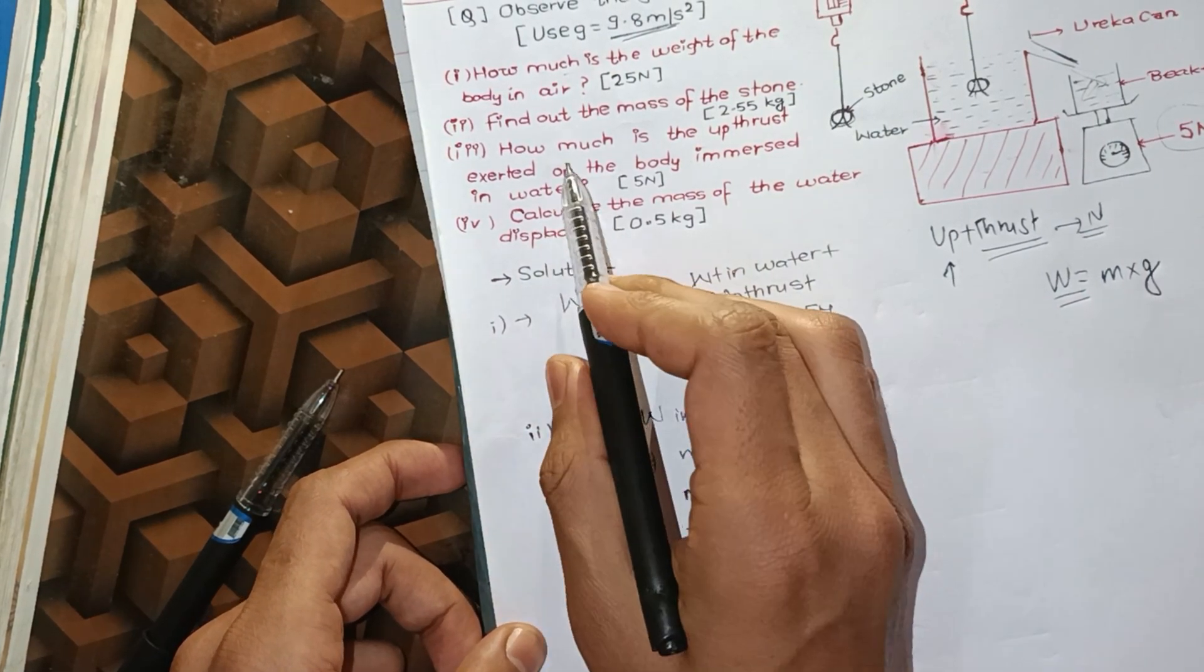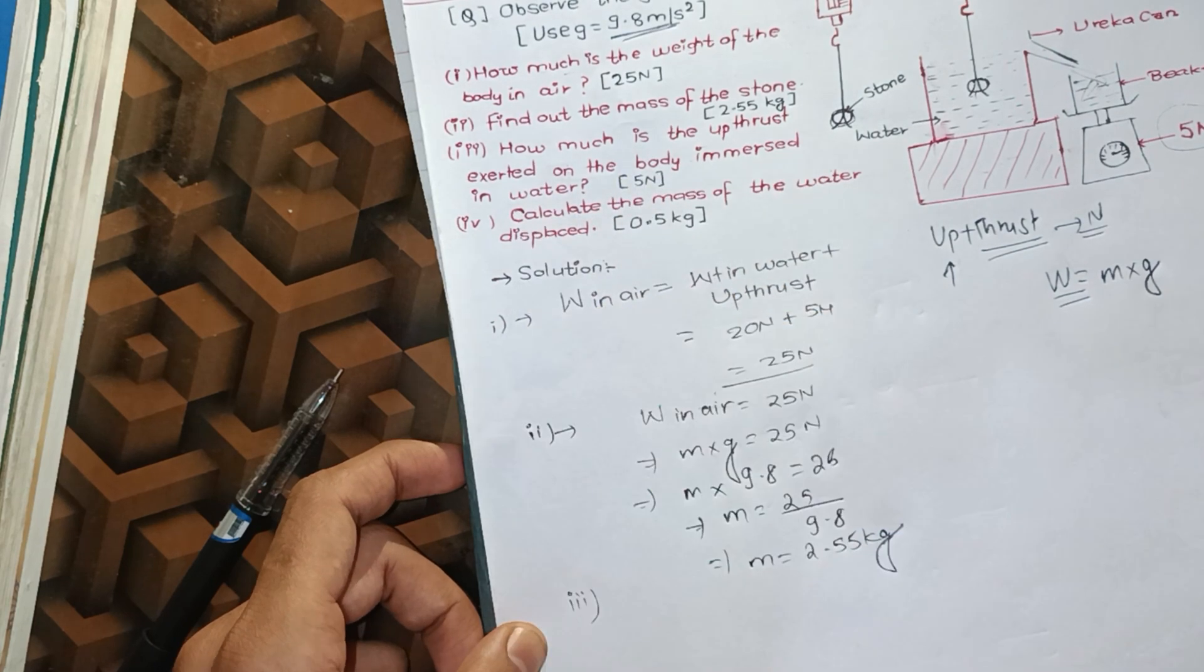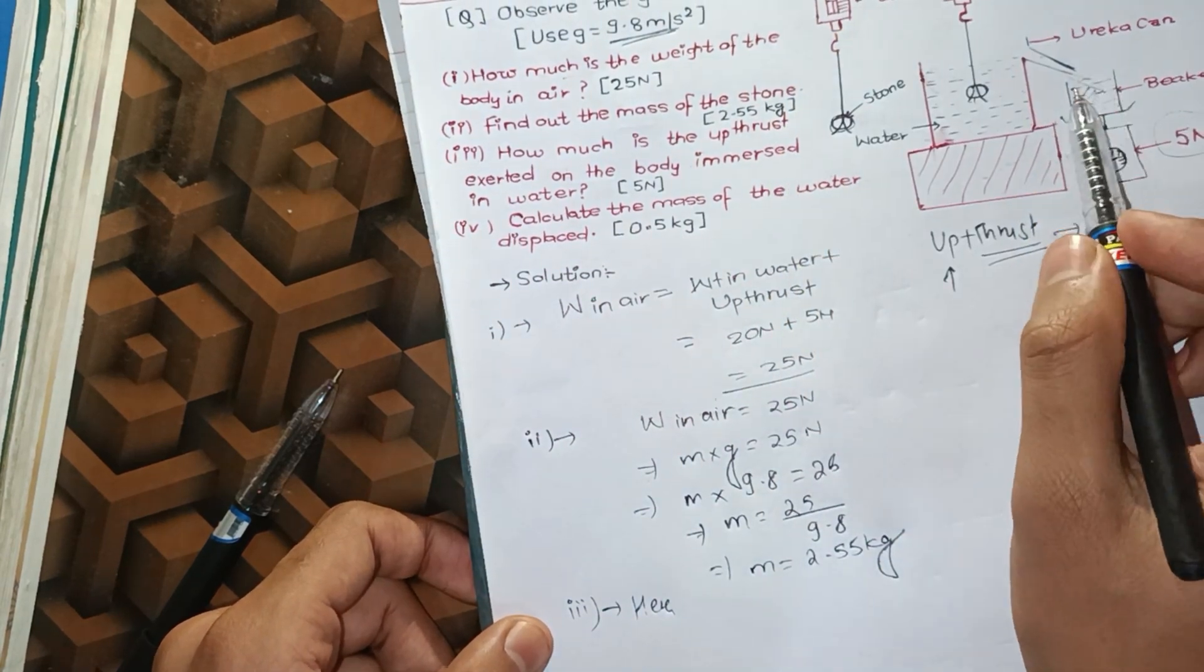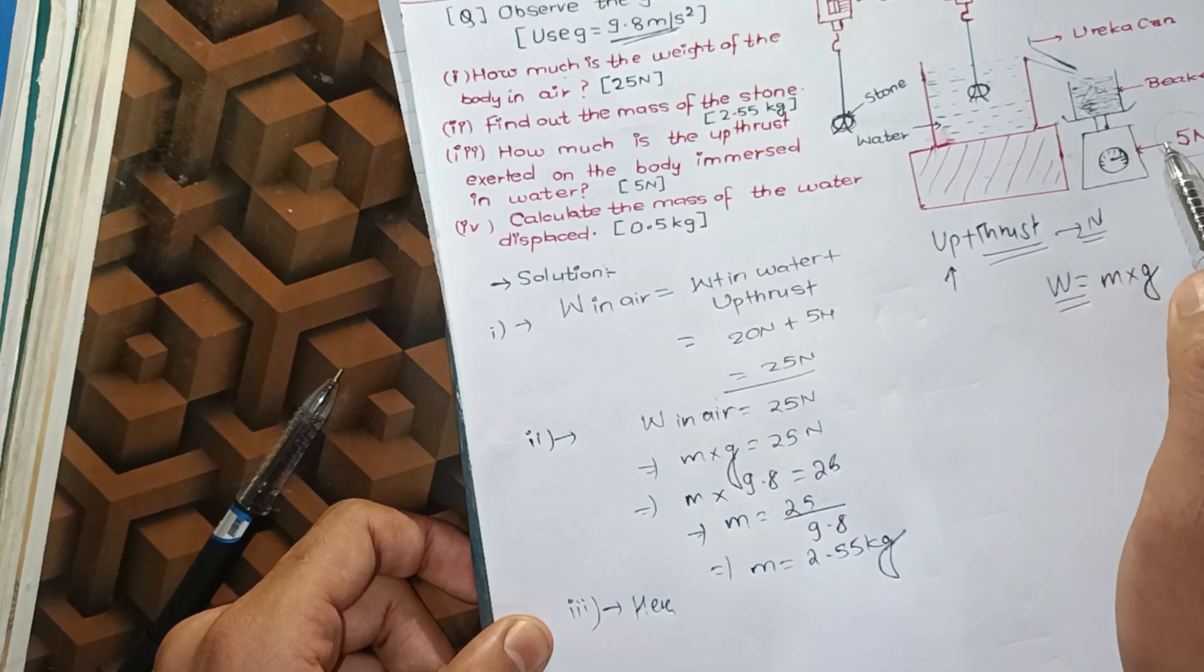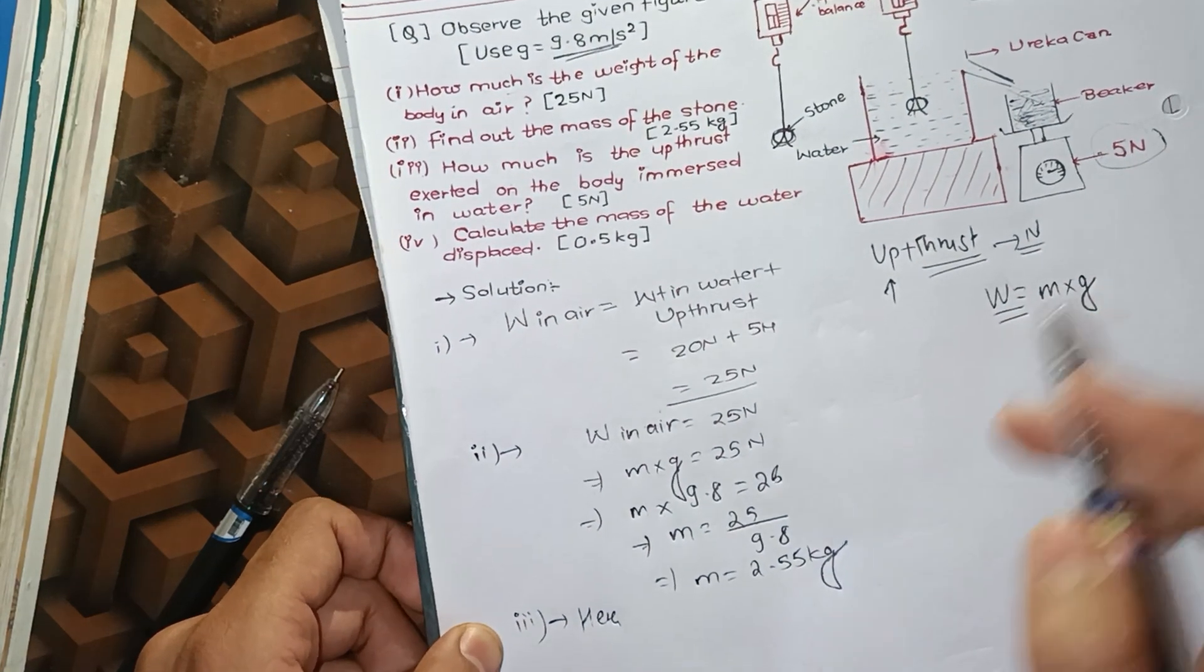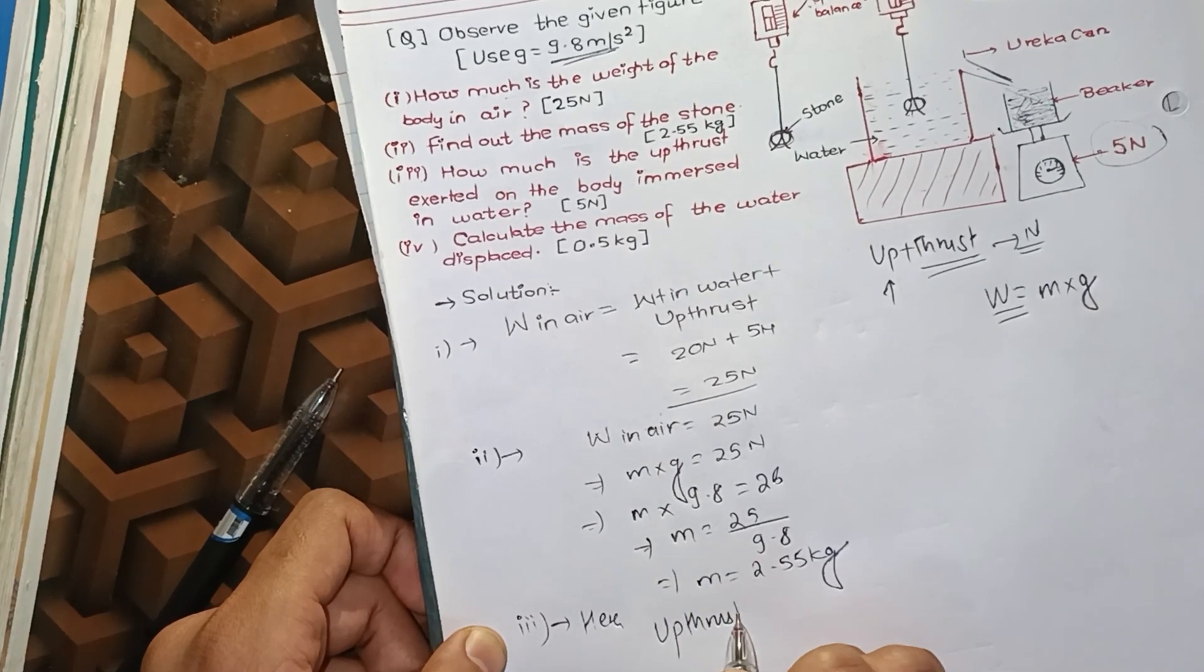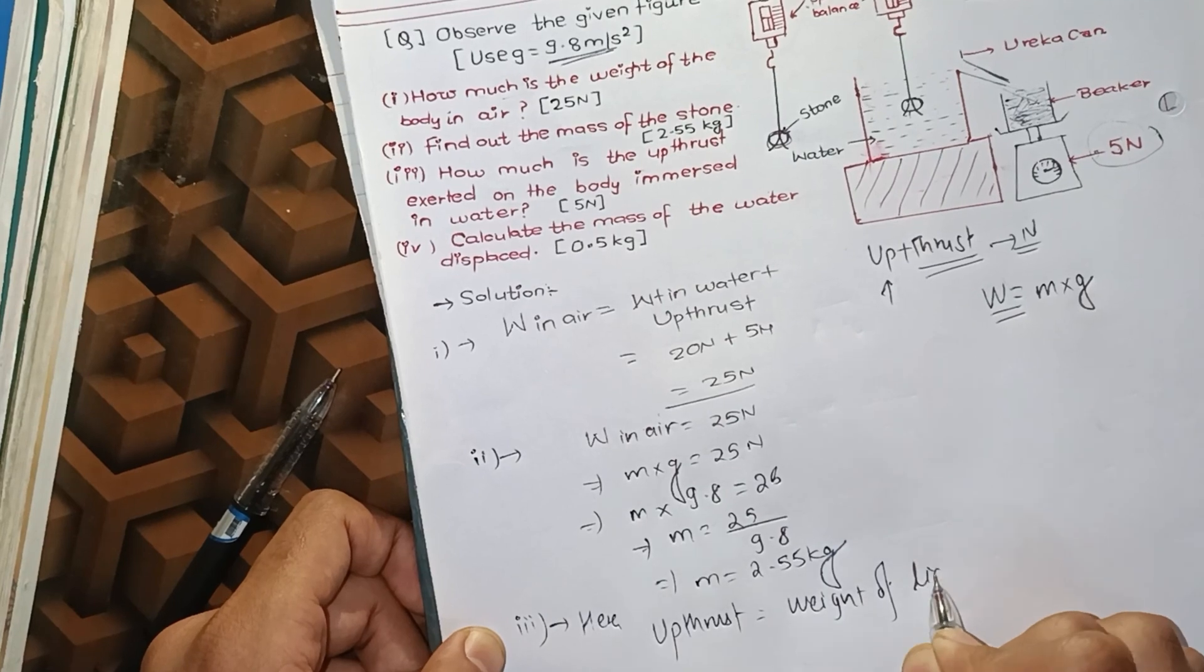How much is the upthrust exerted on the body immersed in water? Upthrust equals weight of liquid displaced, which is equal to 5 newton.